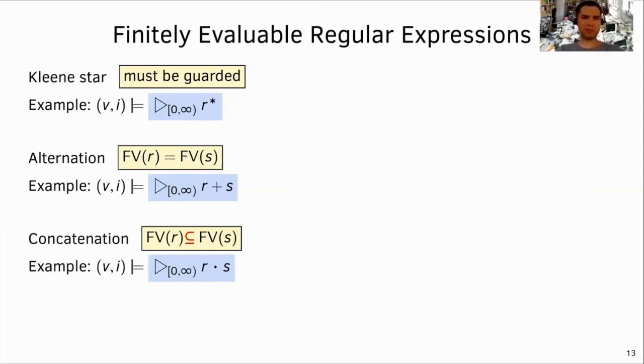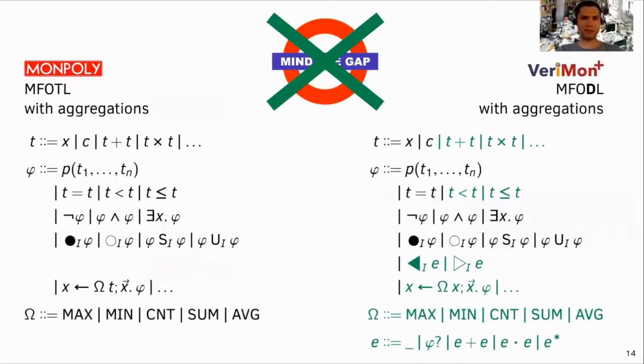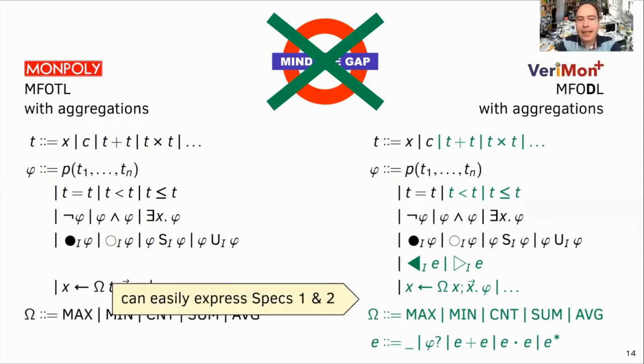That's pretty great. But what about expressing the second policy, you know, the one with the aggregation? Right. So let's call the new monitor Verimon Plus. Overall, it supports all of the Monpoly constructs. We effectively bridge the expressiveness gap between the tools. And in fact, Verimon Plus supports even more constructs now if you consider the regular expressions. So the second policy is just expressed the same way as in Monpoly, using aggregations. I just hope that Verimon Plus is as efficient as Monpoly is.